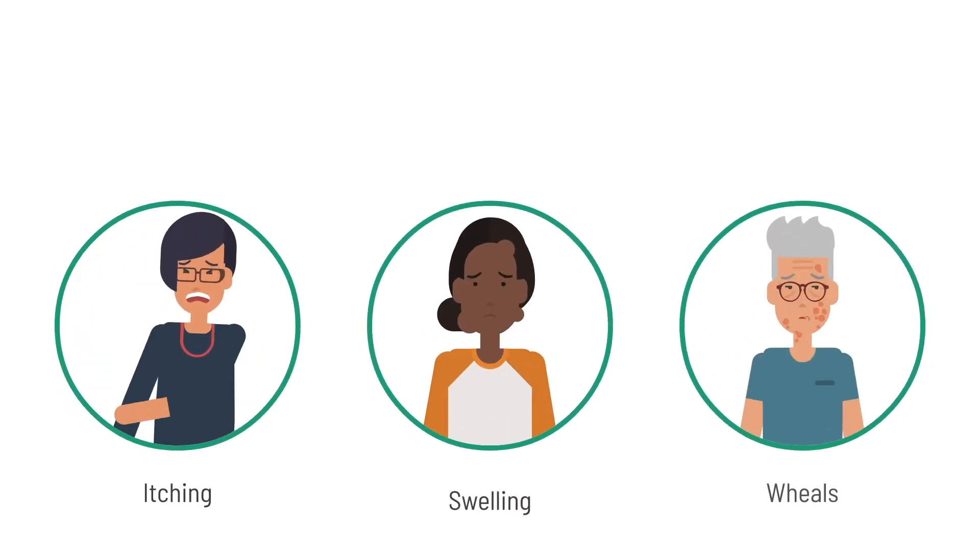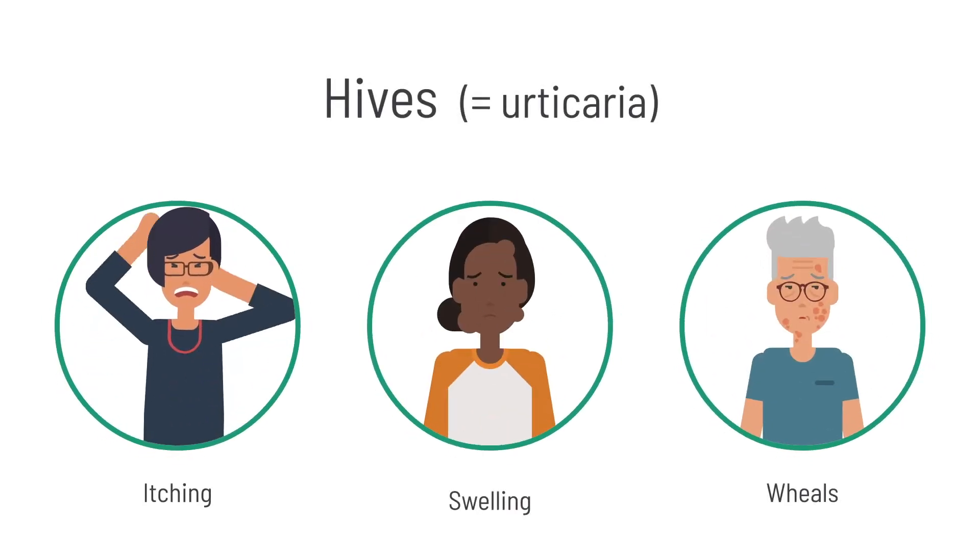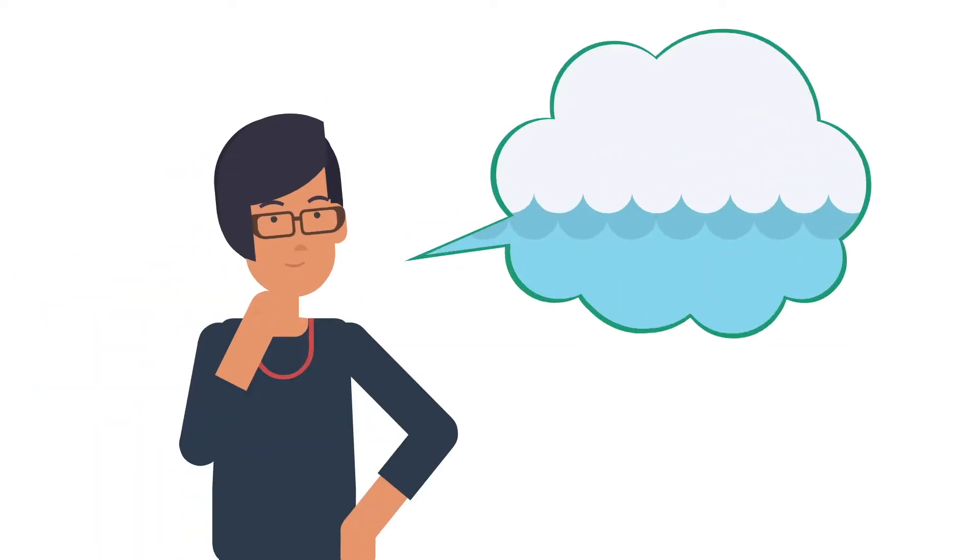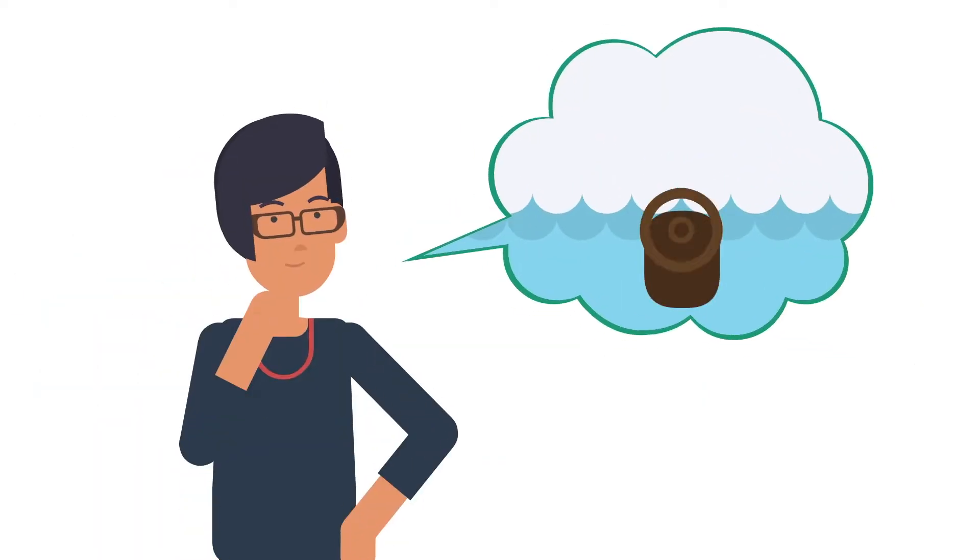Itching, swelling, and wheals – these are the signs and symptoms of chronic urticaria. But only those who know about the course of their own illness can actively counteract a possible loss of control.